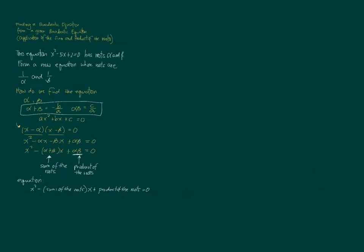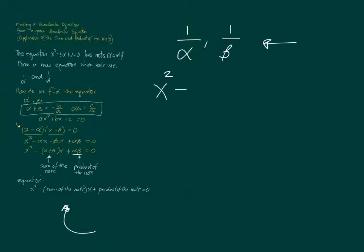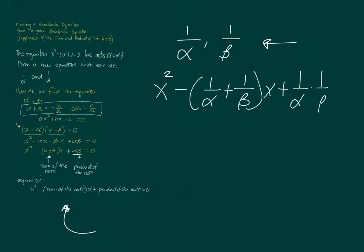In our problem, the equation x squared minus 5x plus 2 equals 0 has roots alpha and beta, and we want to form a new equation whose roots are 1 over alpha and 1 over beta. The new equation is therefore x squared minus (1 over alpha plus 1 over beta)x plus (1 over alpha times 1 over beta) equals 0, since those reciprocals are the new roots.